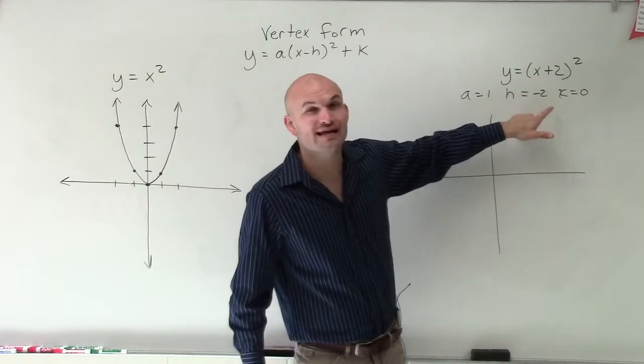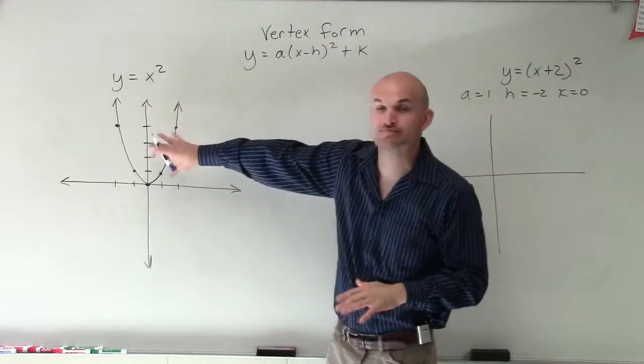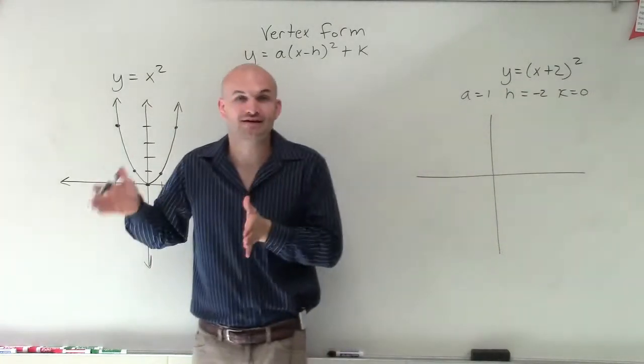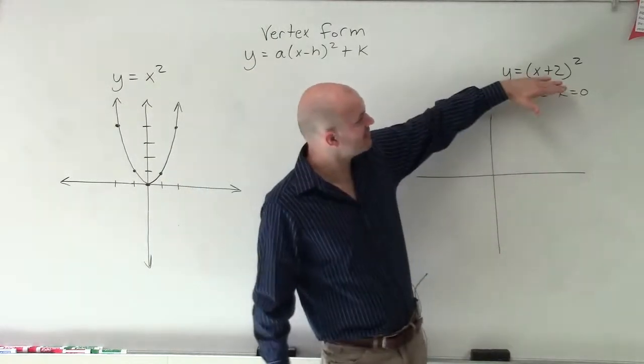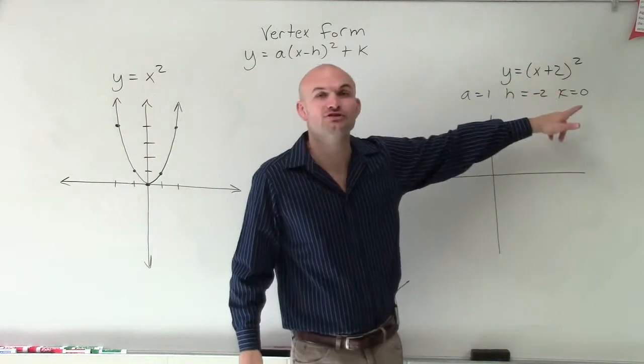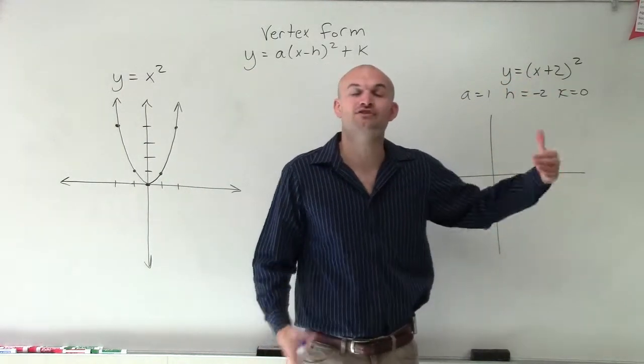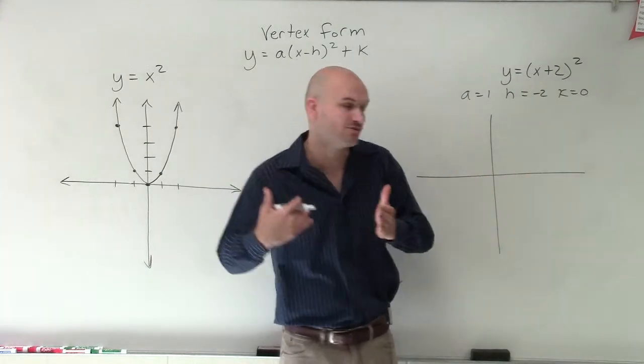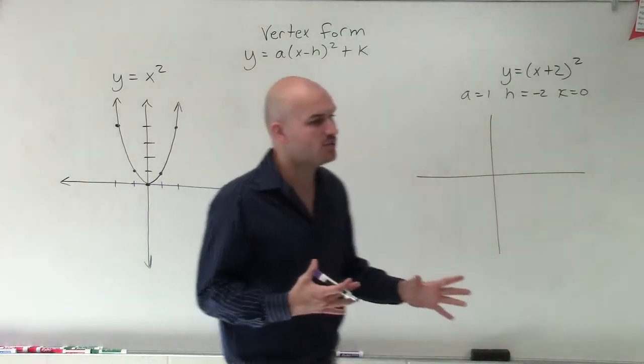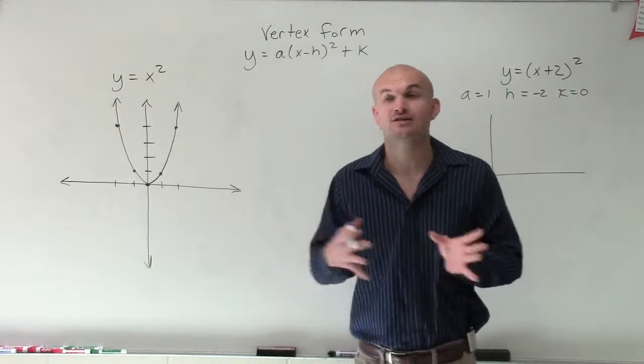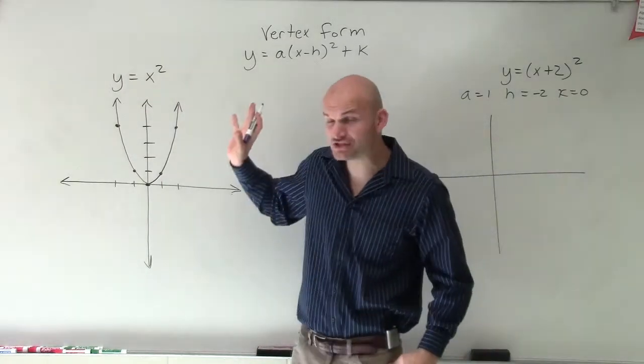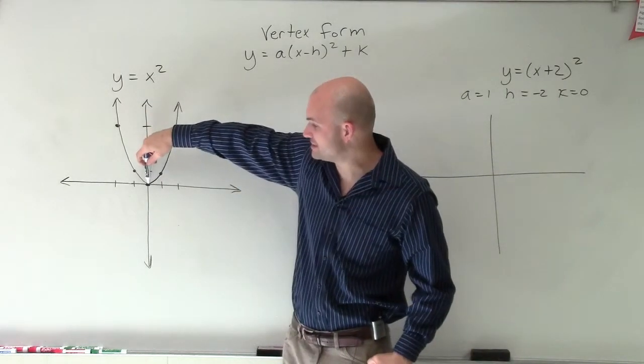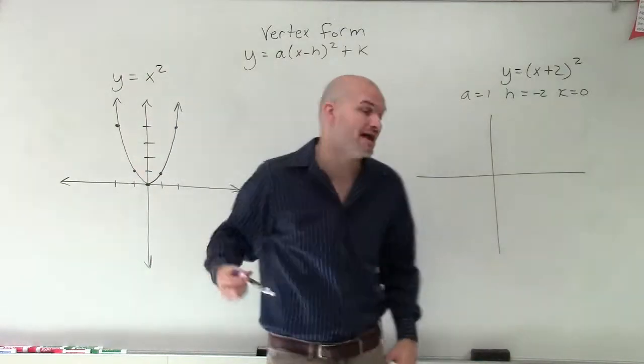Therefore, you can see that h is equal to negative 2. So what I'm going to do is take this parent graph and shift it left two units. A lot of times we can look at that and say, oh, it's x plus 2, and we always think that's to the right. But just remember, it's always to the opposite direction. So which points am I going to want to shift? Well, we have to shift the whole graph, but it's usually easiest to take our vertex and shift that point first.